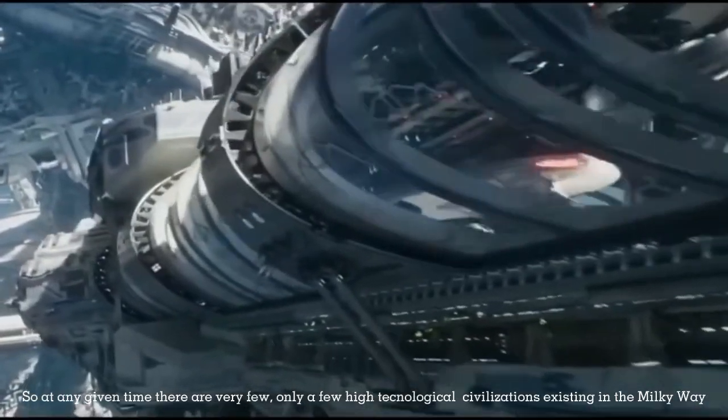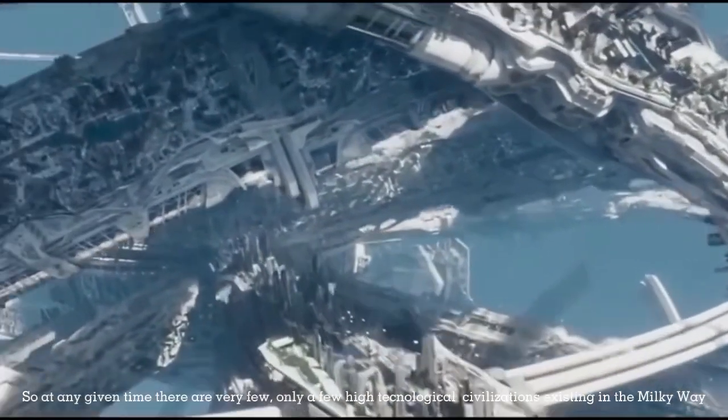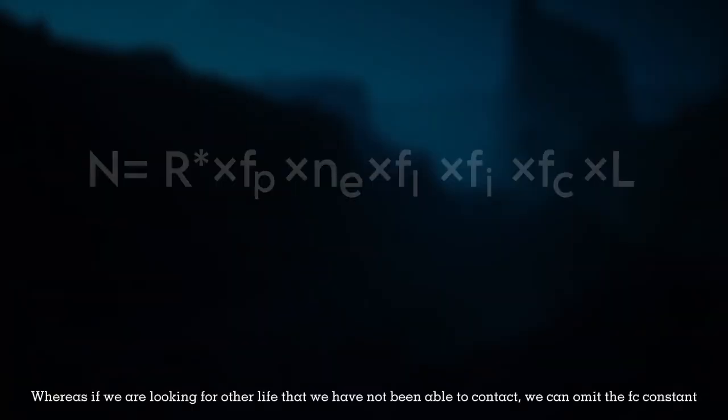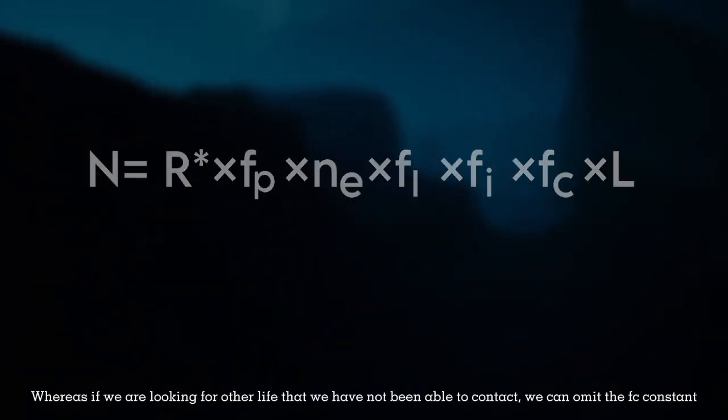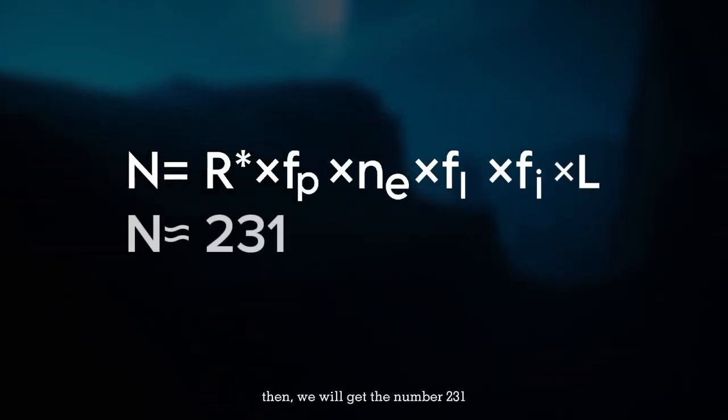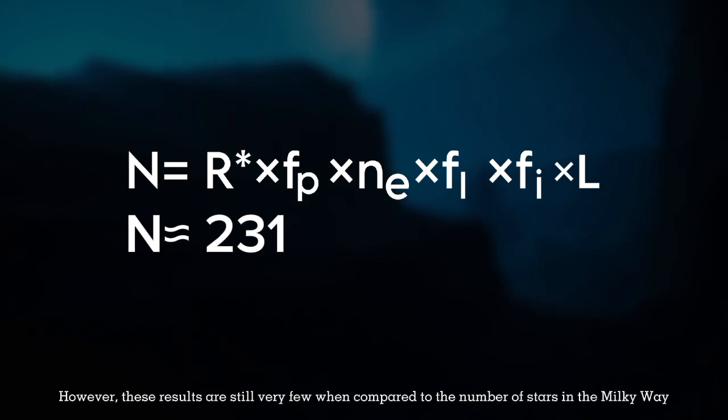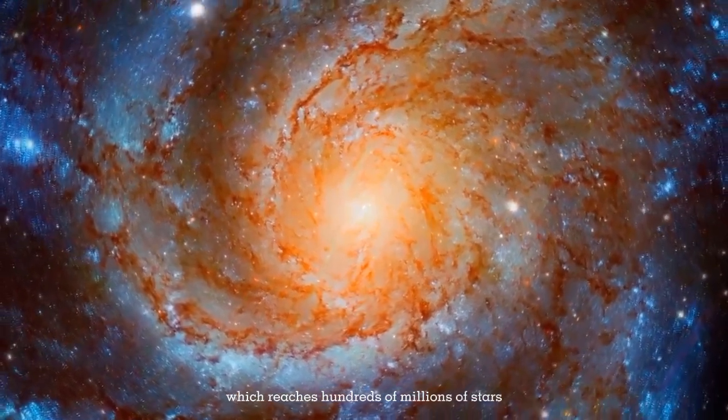So at any given time, there are very few, only a few high technological civilizations existing in the Milky Way. Whereas if we are looking for other life that we have not been able to contact, we can omit the fc constant. Then, we will get the number 231. However, these results are still very few when compared to the number of stars in the Milky Way, which reaches hundreds of millions of stars.